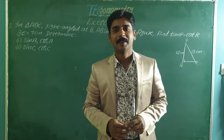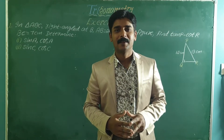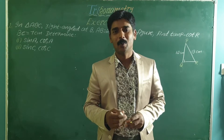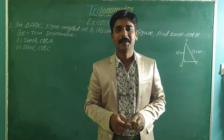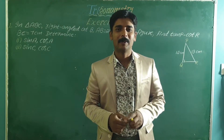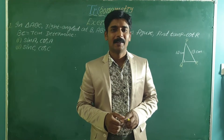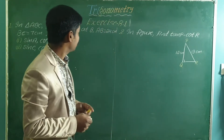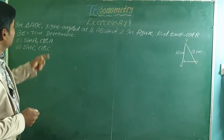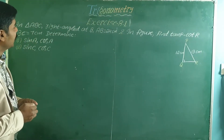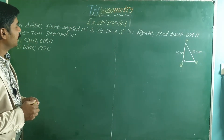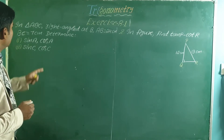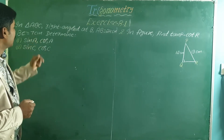Hello dear students. In this class we are going to solve Exercise 8.1 related to trigonometric ratios. Let us take the first problem. In triangle ABC right-angled at B, AB is equal to 24 cm, BC is equal to 7 cm.